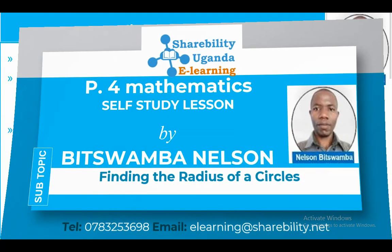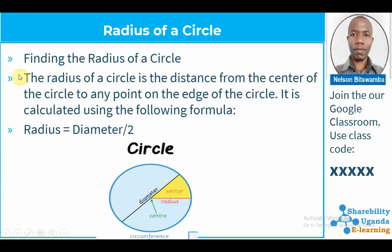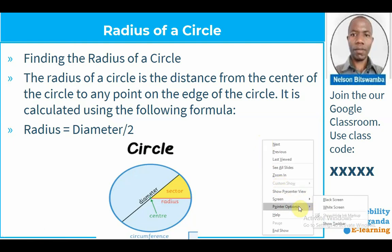In finding the radius of a circle, what we have to understand is the circle itself. We are saying the radius of a circle is the distance from the center of the circle to any point on the edge of the circle. It is calculated using the following formulas. Here they have given us the formula that we can use to find the radius of the circle. Let me get a pen tool so that I can demonstrate this very well.